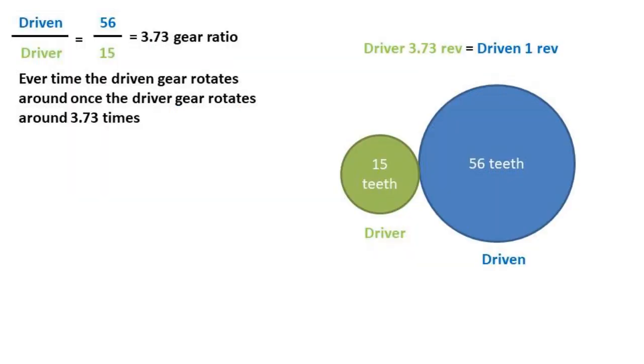Recall that for every one revolution of the driven gear, the driver gear, or where the torque of motion is coming from, rotates the number of times listed in the gear ratio.